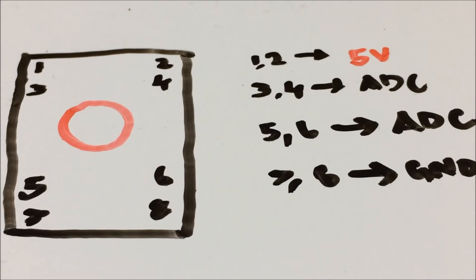The resistance varies according to the movement, and based on the change in the resistance, the analog value received at the channel will be varied.